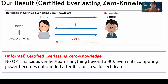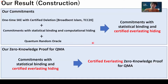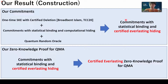Finally, I will explain an outline of our construction. To construct certified everlasting zero-knowledge proof for QMA, we introduce a new quantum commitment with a new hiding property, which we call certified everlasting hiding. In this hiding, a malicious receiver can issue a certificate showing that he deletes the quantum commitment. When the certificate is valid, even if the receiver's computing power becomes unbounded, he cannot obtain the committed value. We construct this quantum commitment from certain cryptographic primitives, and by using this quantum commitment, we construct certified everlasting zero-knowledge proof for QMA. Due to time constraints, I cannot explain the details of our constructions.